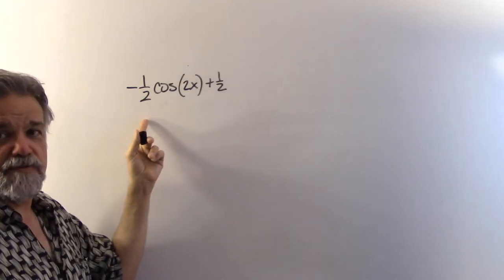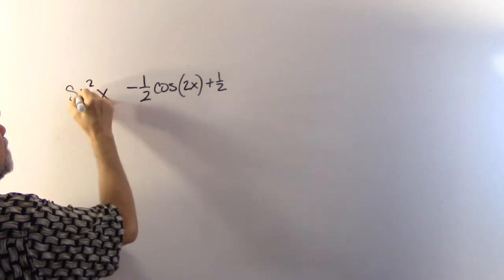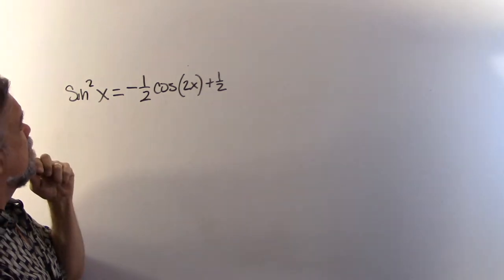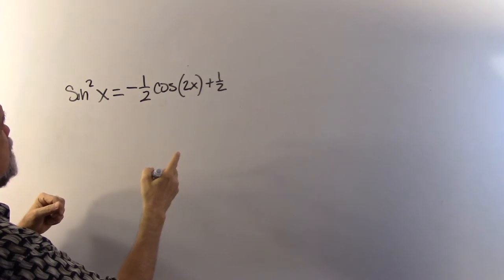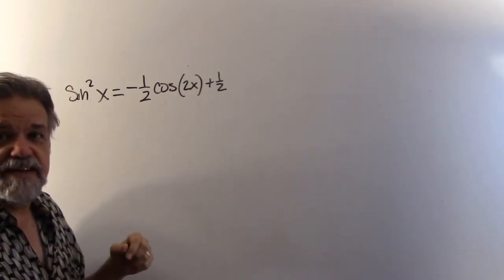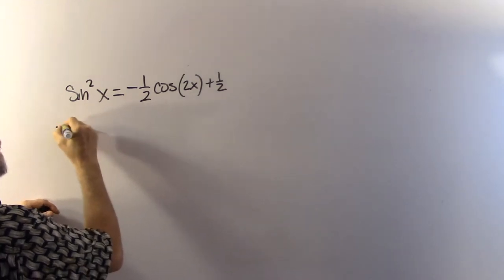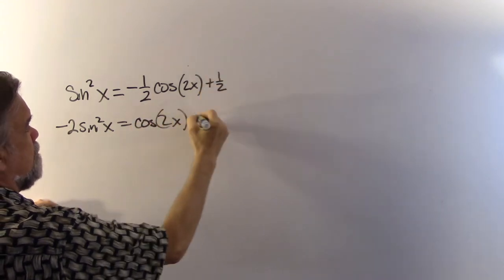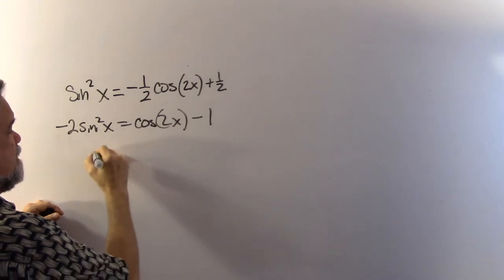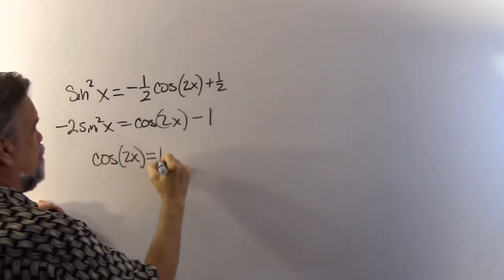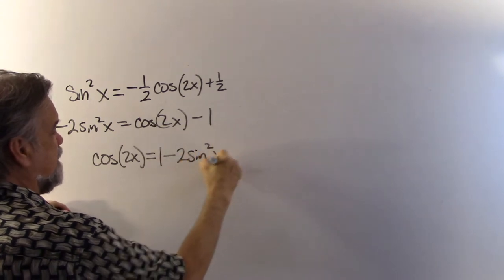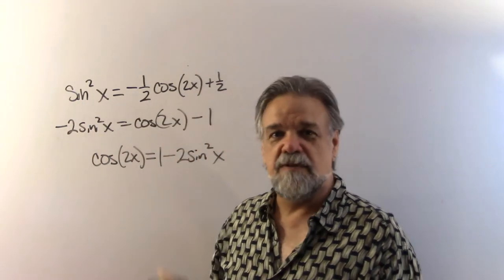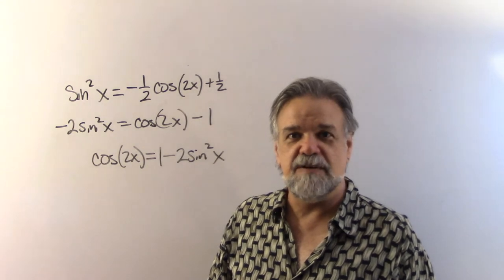And remember, this started as sine squared of x. So: sine squared of x = negative one half cosine(2x) + one half. Multiply both sides by negative two: negative two sine squared of x = cosine(2x) minus one. Add one to both sides and you get cosine of 2x equals one minus two times sine squared of x. That's one of the double angle identities — and we picked it straight off the graph!